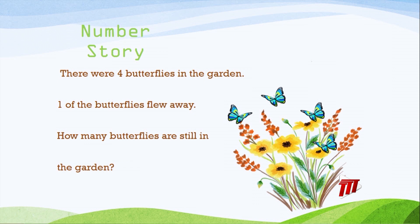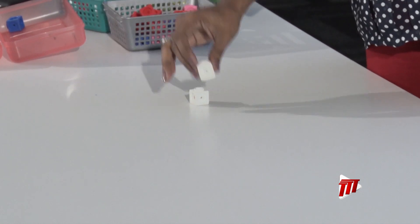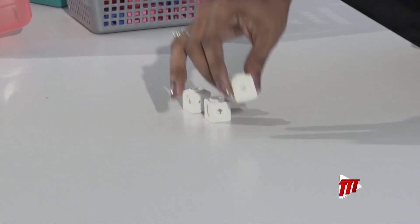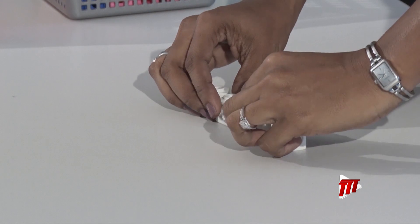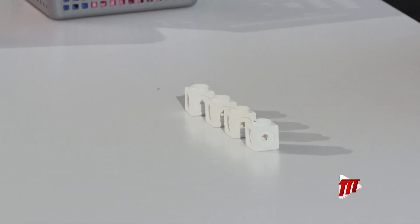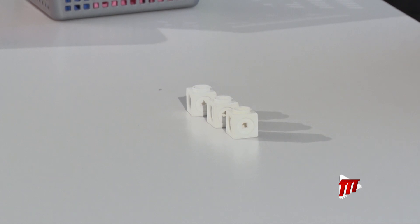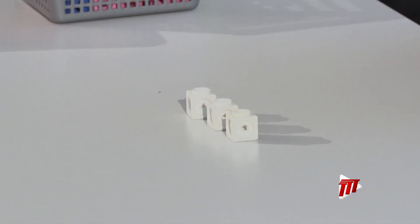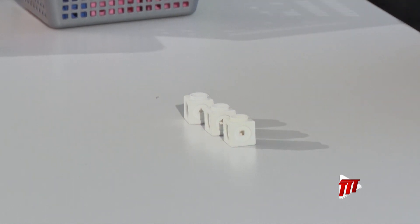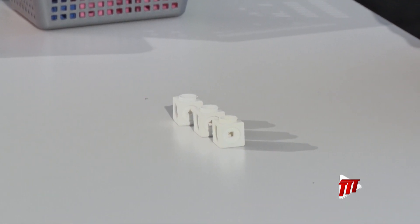Look at those lovely butterflies — four of them are there. One flew away. We use our counters to solve. How many butterflies were there at first? Four — one, two, three, four. And one flew away, so what am I going to do? Yes, I'm going to take away one. How many are left? I count: one, two, three. Four take away one equals three.